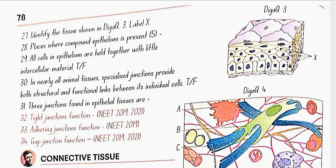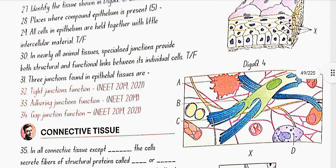All cells in epithelium are held together with little intercellular material. Yes, true. In nearly all animal tissues, specialized junctions provide both structural and functional links between its individual cells. Yes, true.